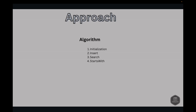Next, search: start from the root node and traverse through the trie using the characters of the word. If any character is missing, return false. After processing all characters, check if the current node is marked as the end of a word — if so, return true. Next, startsWith: this is similar to the search operation but only checks if the prefix exists, without needing the node to be marked as end of a word.